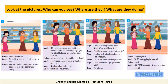Look at the pictures. Who can you see? Where are they? What are they doing? Go through the text to answer these questions. Let's see the answers. Who can you see? Here we see three girls: Fatima, Amal, and Alya. Where are they? They are in the school canteen. What are they doing? They are choosing their meal. Well done.